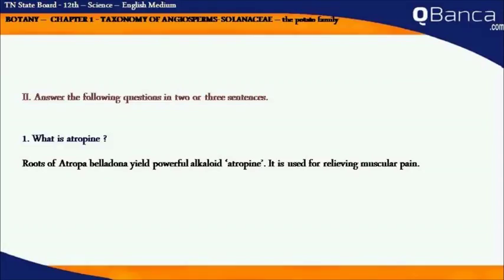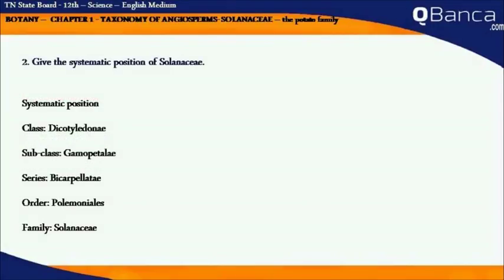Atropine: roots of Atropa belladona yield a powerful alkaloid, atropine. It is used for relieving muscular pain.